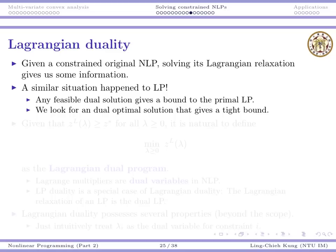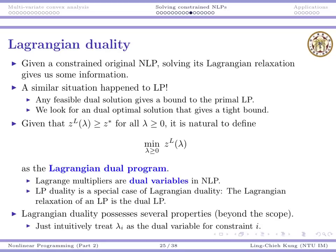So this is the idea. Given that we have an upper bound for all the lambda, naturally we want to find the parameters so that the bound is tightest or the smallest. And the new optimization problem will be the Lagrangian dual program defined as Lagrangian dual.